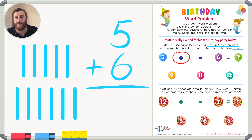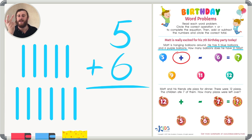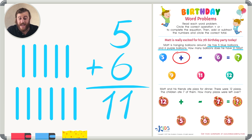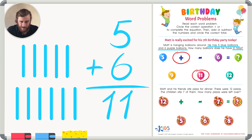Let's use the strategy of counting on. Five — six, seven, eight, nine, ten, eleven. Five plus six is eleven, so this problem asks us to add the balloons and gives us a total of eleven balloons, both blue and purple.